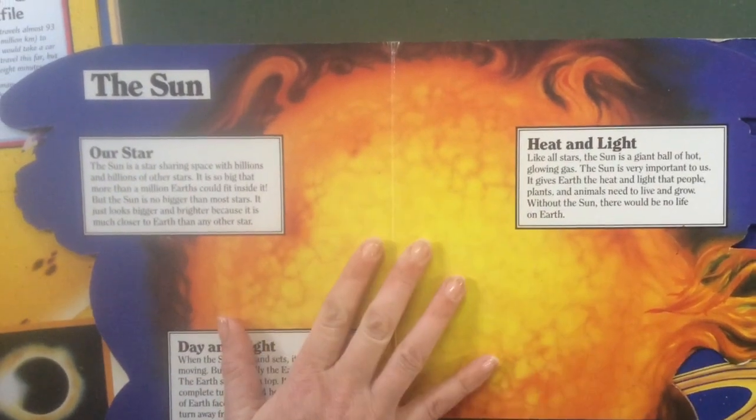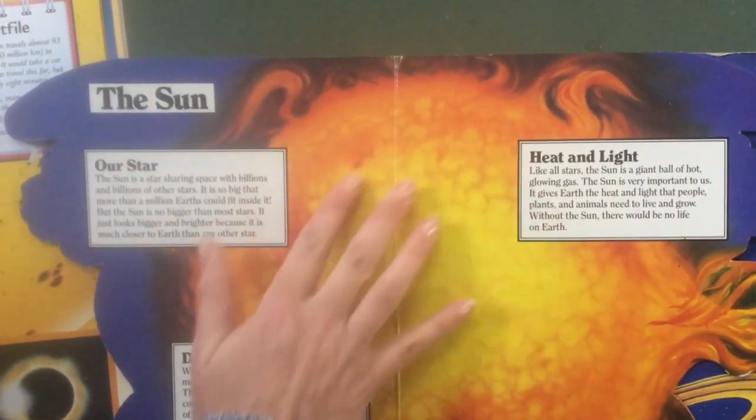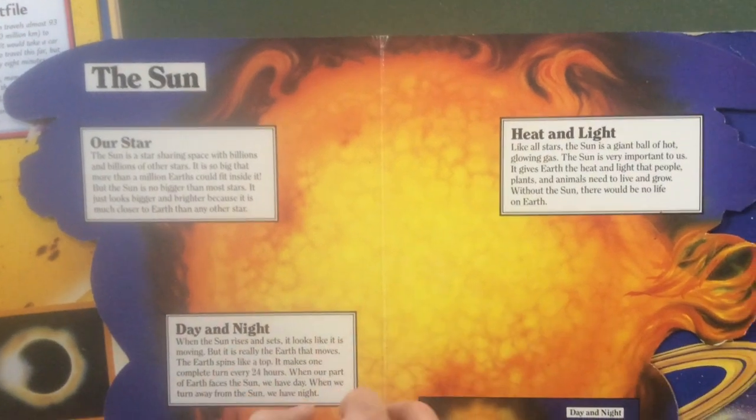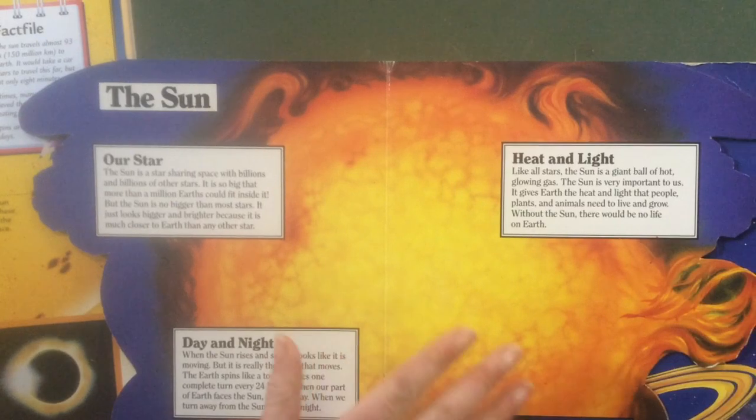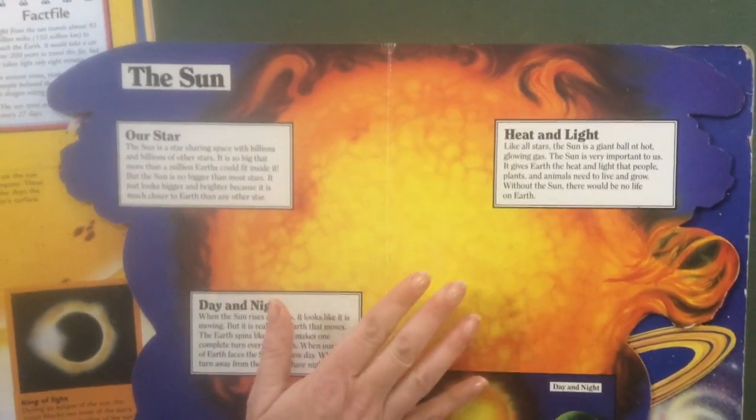Heat and light. Like all stars, the sun is a giant ball of hot, glowing gas. The sun is very important to us. It gives the earth heat and light.